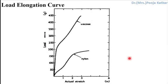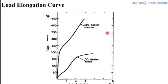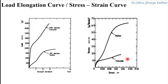Let us now study the behavior of textile materials towards the application of load. In this graph, I have shown two different materials — viscose and nylon. If I ask you to compare these two for strength, your answer might be that viscose is stronger than nylon. But practically, nylon is stronger than viscose. The actual condition could be: viscose may be 250 denier while nylon is 30 denier. So, unless you know the fineness of the material, it is not possible to compare their strength. Similarly, without knowing the initial length, you cannot compare extensibility — hence, it is more appropriate to convert the load-elongation curve into a stress-strain curve.